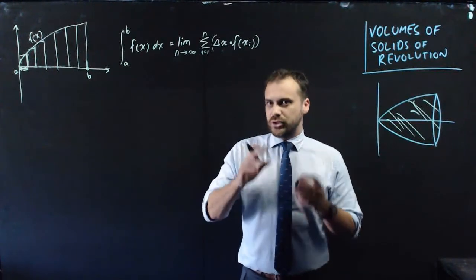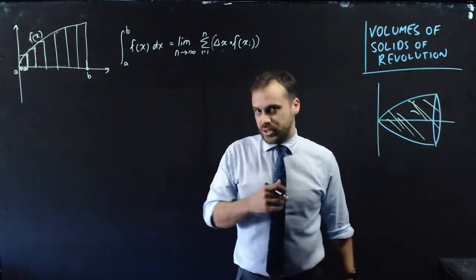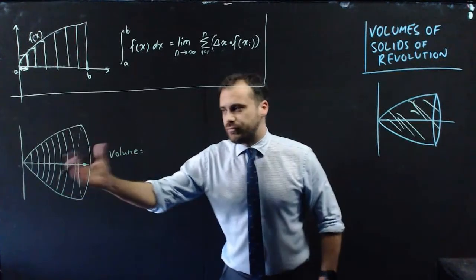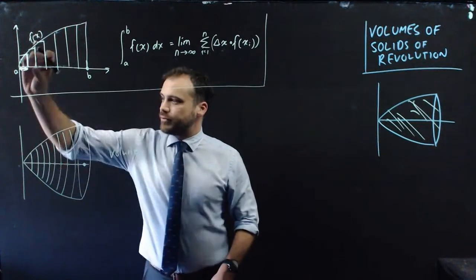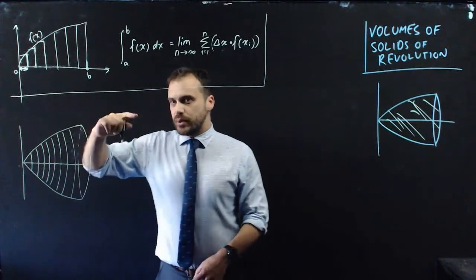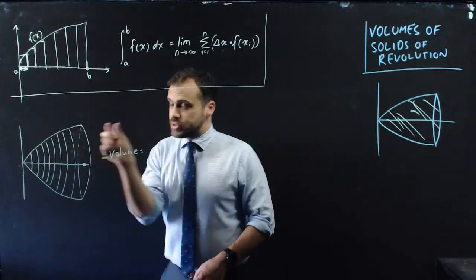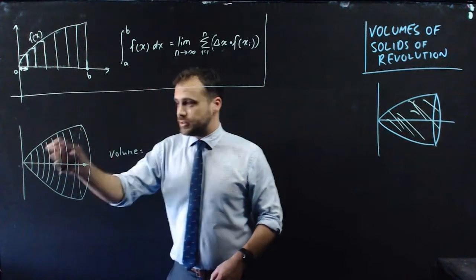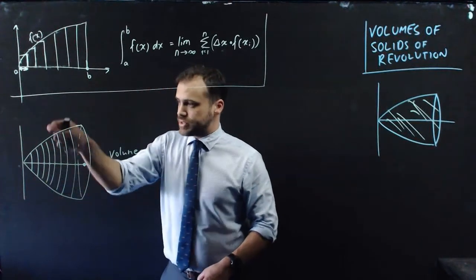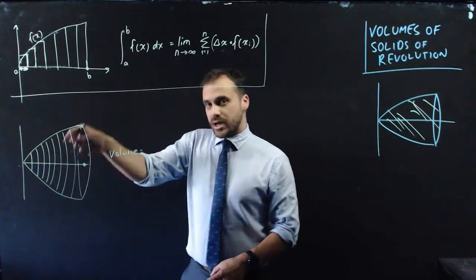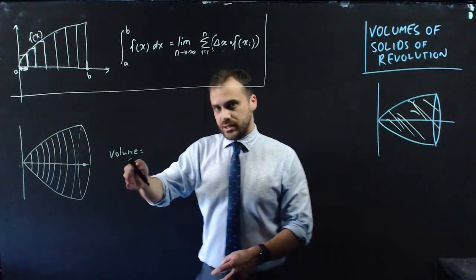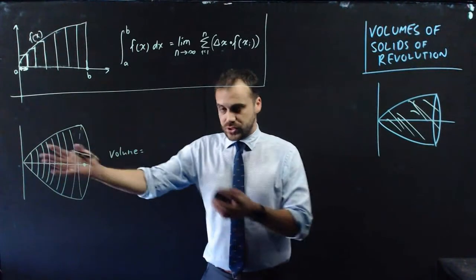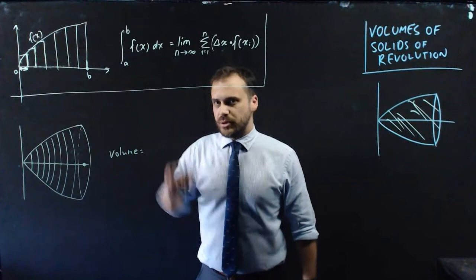When we do a volume of solid of revolution, we're going to do pretty much the same thing. So let's look at how to find the volume of this. We don't have rectangles anymore. What we have are cylinders, very thin cylinders. Here's a strip of a cylinder, strip of a cylinder, strip of a cylinder, getting larger as we go on down this line. Not necessarily so in all functions, just in this function. That's besides the point.